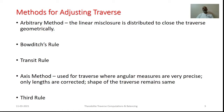The arbitrary method is one in which linear misclosure is distributed to close traverses geometrically. Whereas in the axis method, the angular measures are expected to be very precise and we correct only lengths, so the shape of the traverse remains the same. In this particular presentation, I am not touching the arbitrary method as well as the axis method.